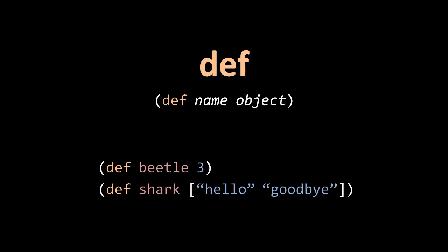In the second example, we're taking this vector and we are storing it in a var mapped to shark in the current namespace. And again, if the current namespace already had a mapping to shark, then this is modifying that var, not creating a new one.